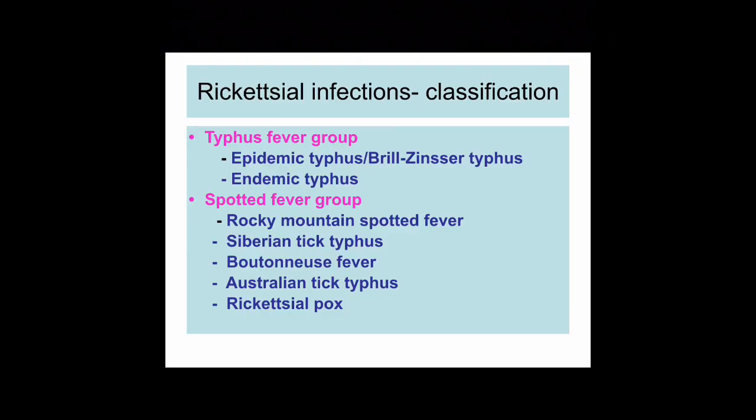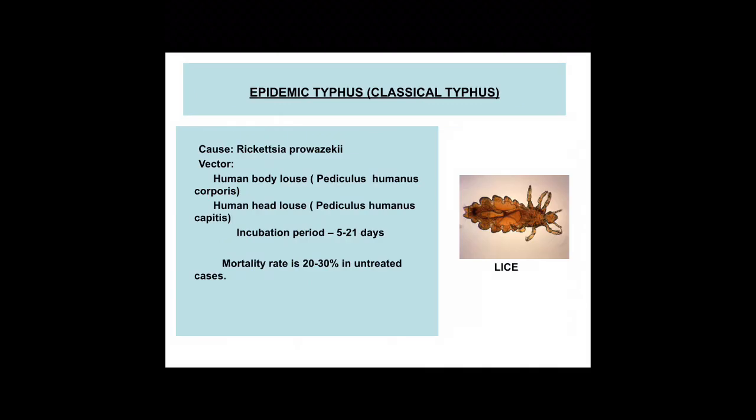Before we discuss symptoms, let me remind you of the groups of rickettsial infection: the typhus fever group and the spotted fever group. Epidemic typhus, otherwise known as classical typhus, is caused by Rickettsia prowazekii. The vector is the human body louse or the human head louse, with an incubation period of 5 to 21 days. The mortality of epidemic typhus is 20 to 30 percent if untreated.